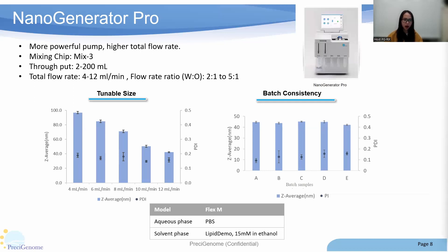Another feature of Nanogenerator Pro is its excellent consistency. The figure on the right-hand side shows the batch-to-batch reproducibility of Pro. Using the same formulation and parameters, you may prepare repeatable LNPs with consistent size and PDI values.